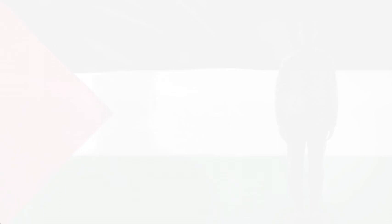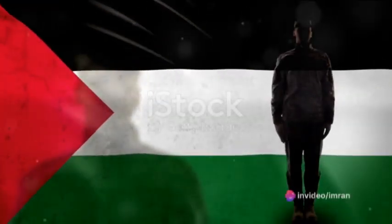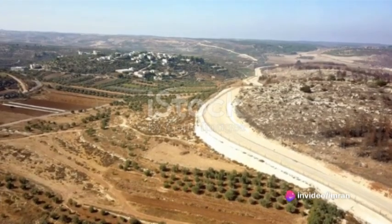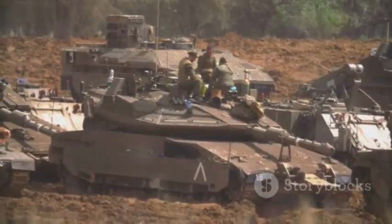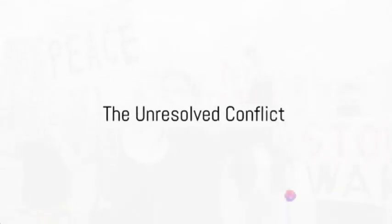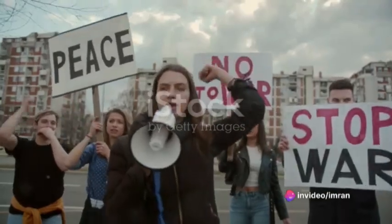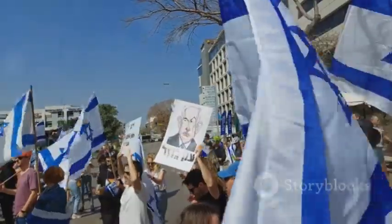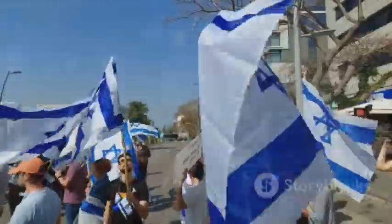The turn of the 21st century saw the eruption of the Second Intifada, a Palestinian uprising marked by waves of violence. This period witnessed the construction of the Israeli separation barrier and the disengagement from Gaza, further complicating the dynamics of the conflict. Today, the conflict remains unresolved, with peace seeming more elusive than ever, and continues to be a major point of contention in international relations, with recent events sparking renewed debates about the path towards a just and sustainable solution.